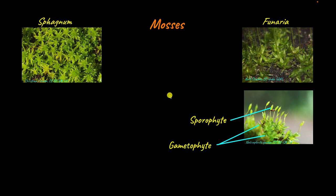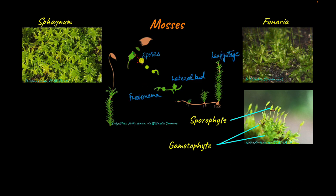Unlike liverworts, the spores of mosses don't directly develop into gametophytes. The capsule bears the haploid spores, and when the capsule ruptures, the spores are released. Instead of forming gametophytes directly, they develop into an intermediate stage called the protonema. The protonema is a branched filamentous structure.